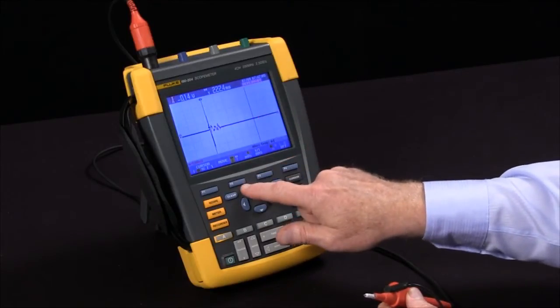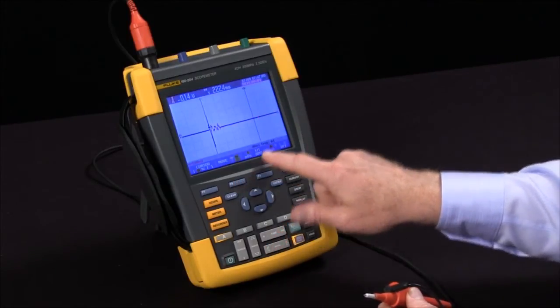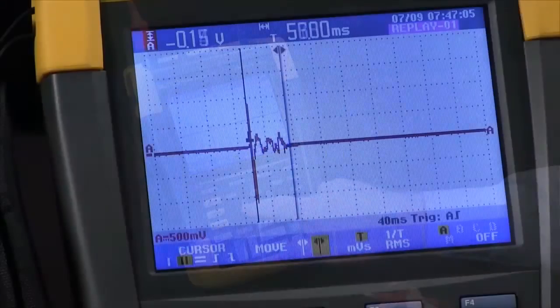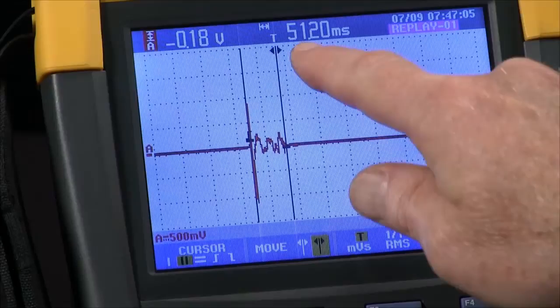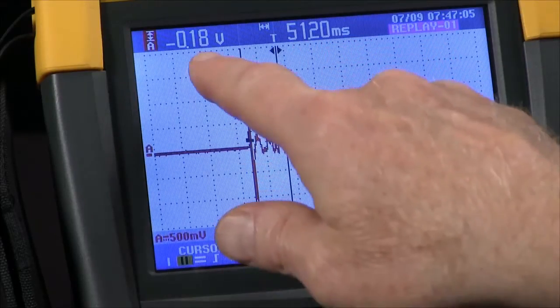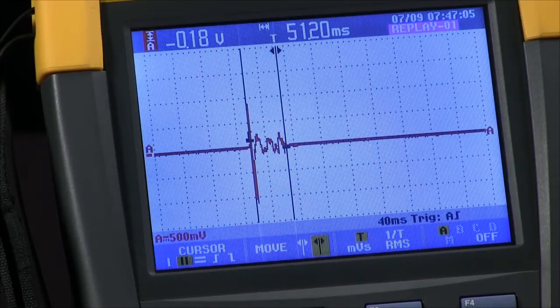I'll switch to the second cursor by pressing the F2 key. Now I've got control of this one. I'll bring it to the end of the event and I can see the delta time 51 milliseconds between those two points and the difference in voltage as well.